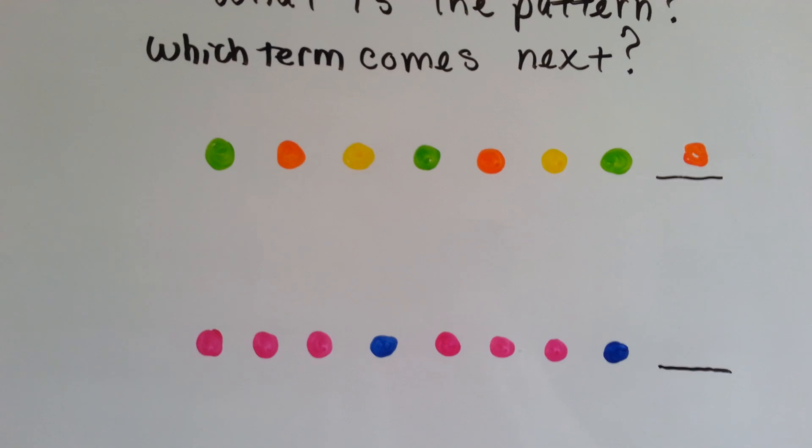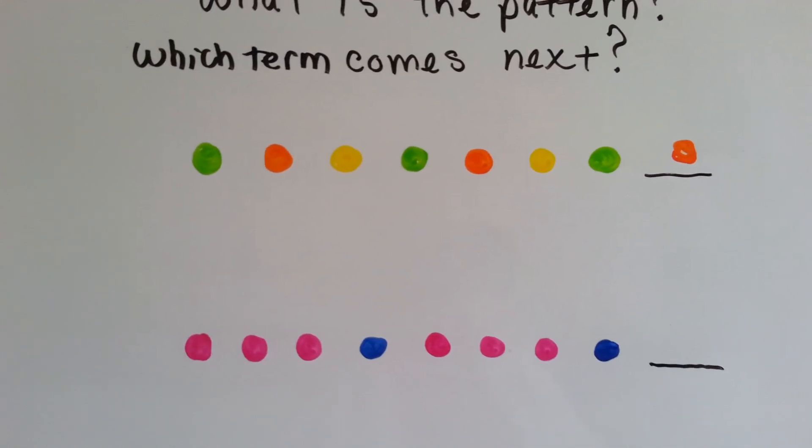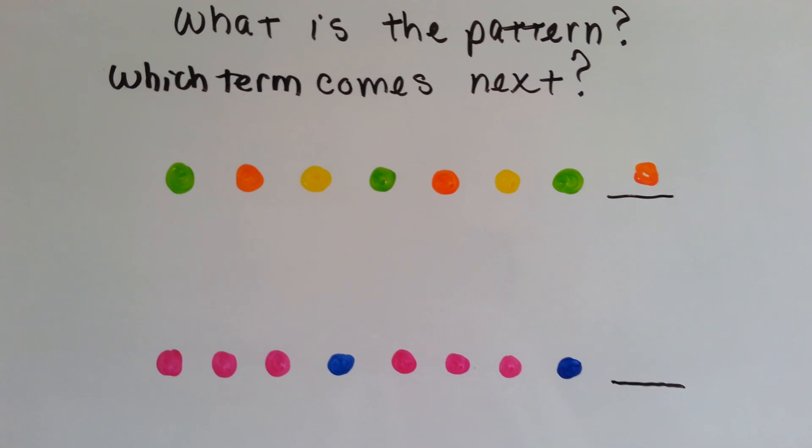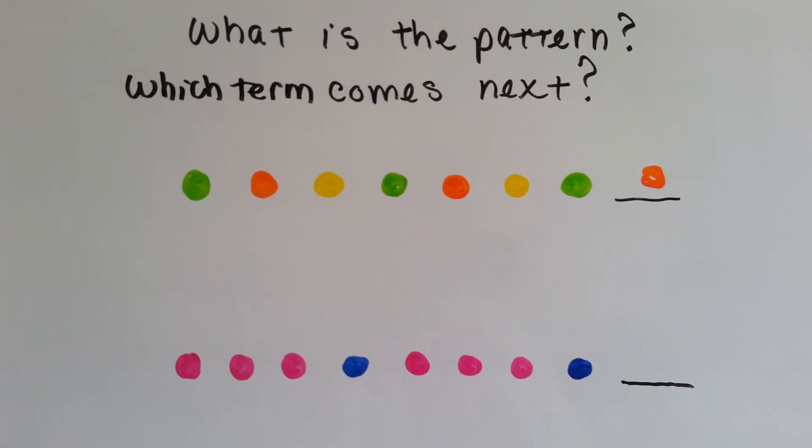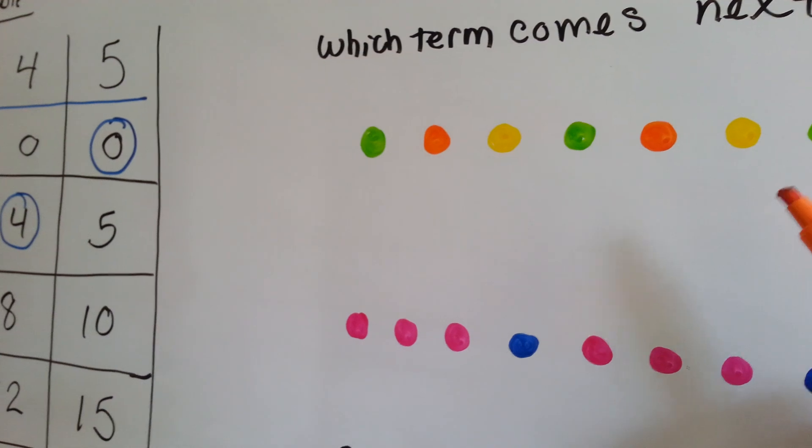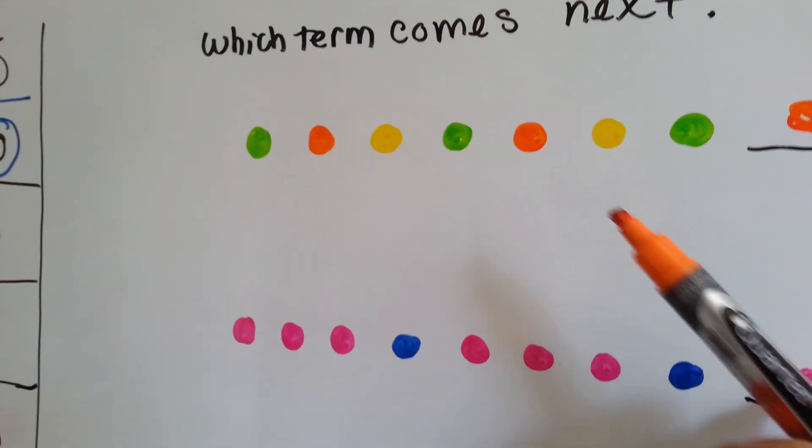How about this one? Pink circle, pink circle, pink circle, blue circle, pink circle, pink circle, pink circle, blue circle. What's the very next one? If you said pink circle, you were right. Okay, I'll get that in there.